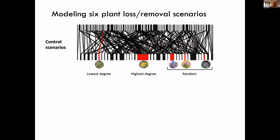We modeled six plant removal scenarios. The first three were controls: randomly removing plants from the network, removing the plant with the highest degree (most direct insect partners), and removing the plant with the lowest degree. We expected random removal to be intermediate, high-degree removal to have a strong network impact, and low-degree removal to have a low impact.